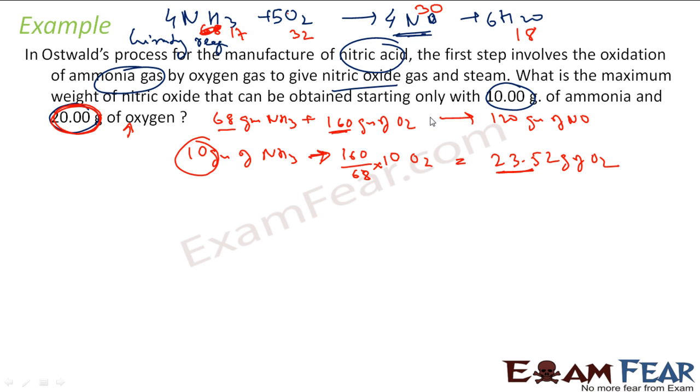So that means our volume or the grams of nitric oxide will depend on the oxygen. So let us take this equation now. It says that 160 grams of oxygen gives you 120 grams of NO. So if 160 grams of oxygen gives you 120 grams of NO, 20 grams of oxygen will give you 120 by 160 into 20 grams of nitric oxide. So if you solve this, you get 15 grams of nitric oxide. Pretty easy.